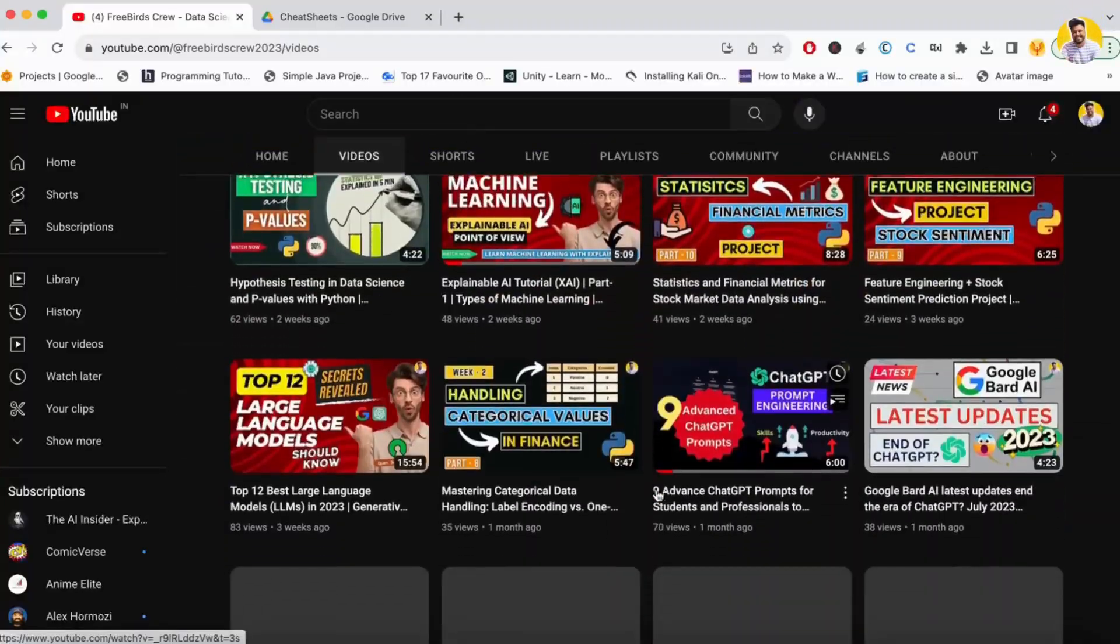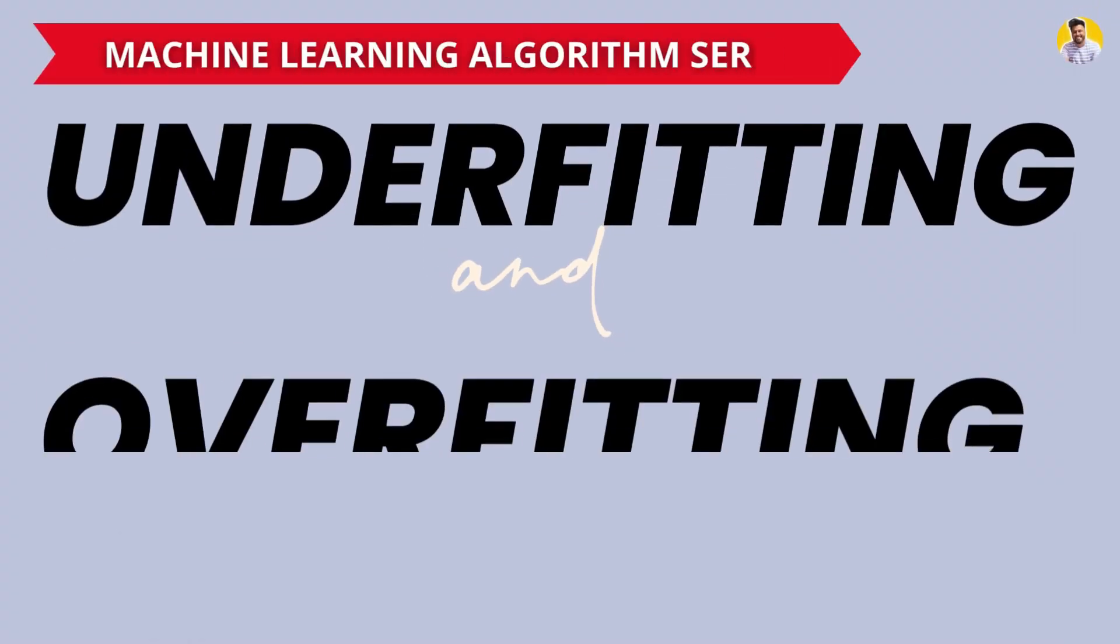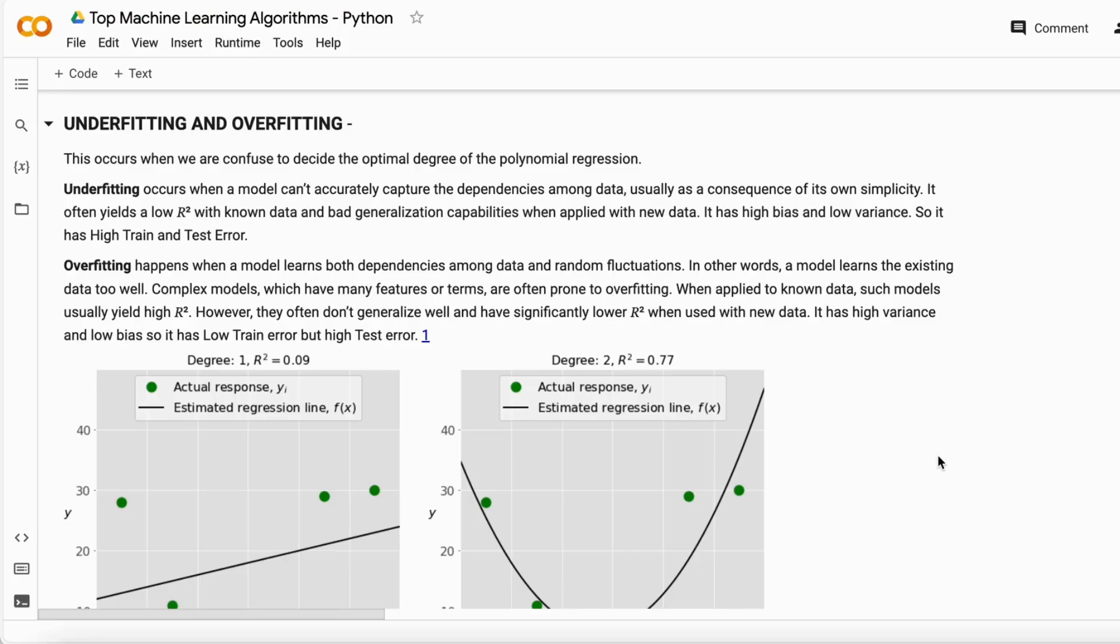Hello guys and welcome to Free Word Screw. In this video I will tell you about the concept of underfitting and overfitting. Underfitting and overfitting are the two major problems in machine learning domain. Whenever you try to build a machine learning model, if that model has underfitting and overfitting issues, then your model does not perform well in production or when used by the client.